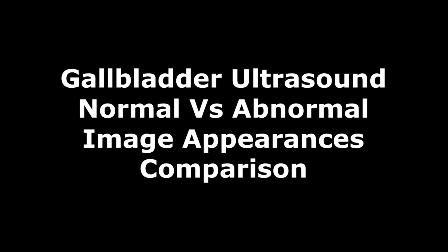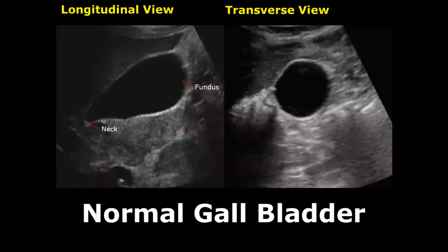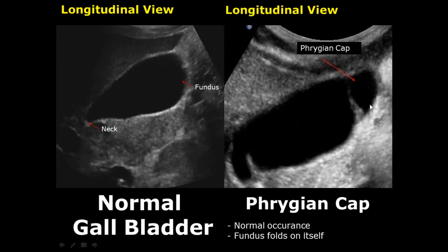Hello everyone, this is Dr. Sam and today we will study gallbladder pathologies. The normal gallbladder has an anechoic lumen with hyperechoic walls. Here is the neck of the gallbladder, over here is the fundus, and the central part is the body. This is the transverse view of the gallbladder.